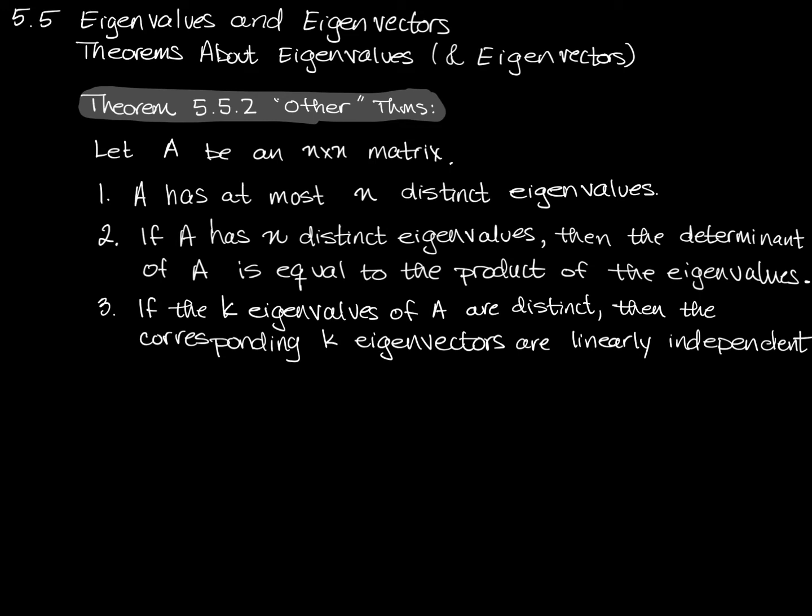This is a proof by contradiction — I wouldn't necessarily expect you to be able to produce a proof like this at this point, but it would be worth reading to make sure you can follow it. Math majors would eventually be expected to follow and produce this kind of proof. The key takeaway: if you have some eigenvalues for a square matrix A and all of those eigenvalues are distinct, then the eigenvectors that go with them will be linearly independent. Note this does not go the other way — it's an if-then statement, not if-and-only-if.